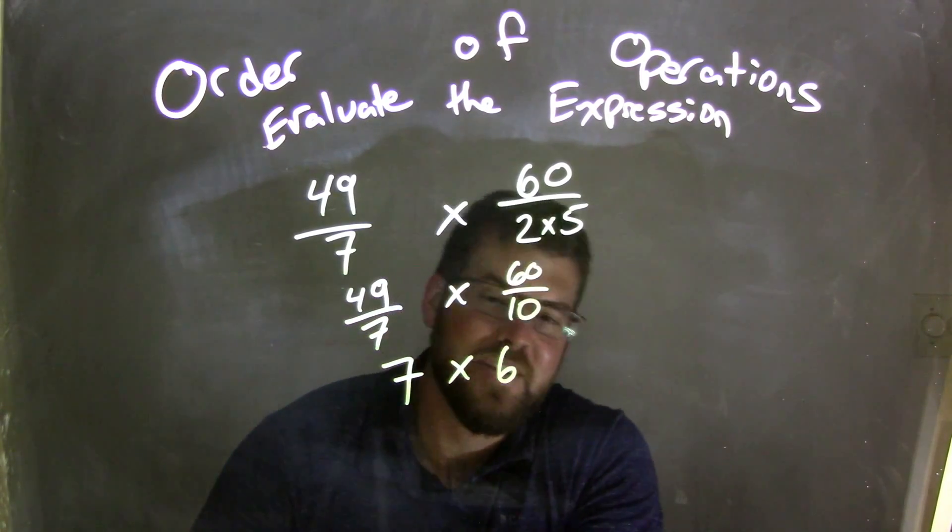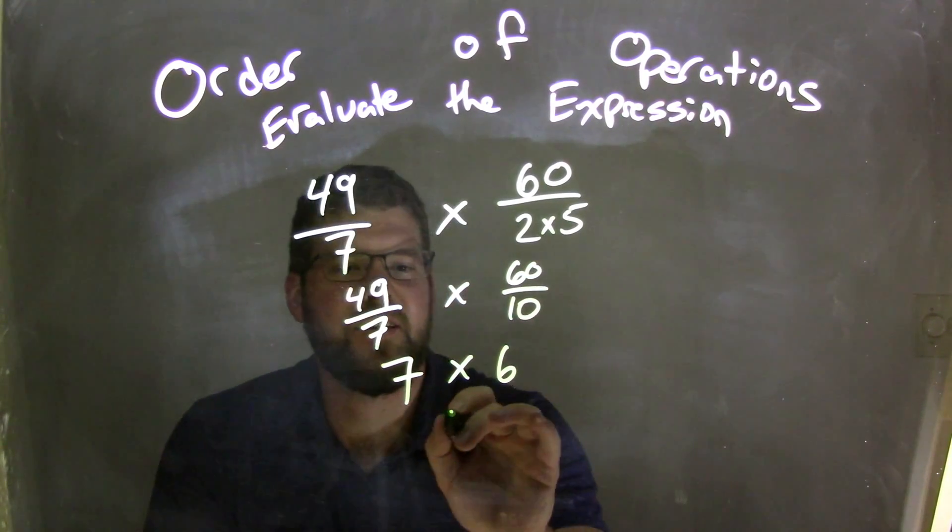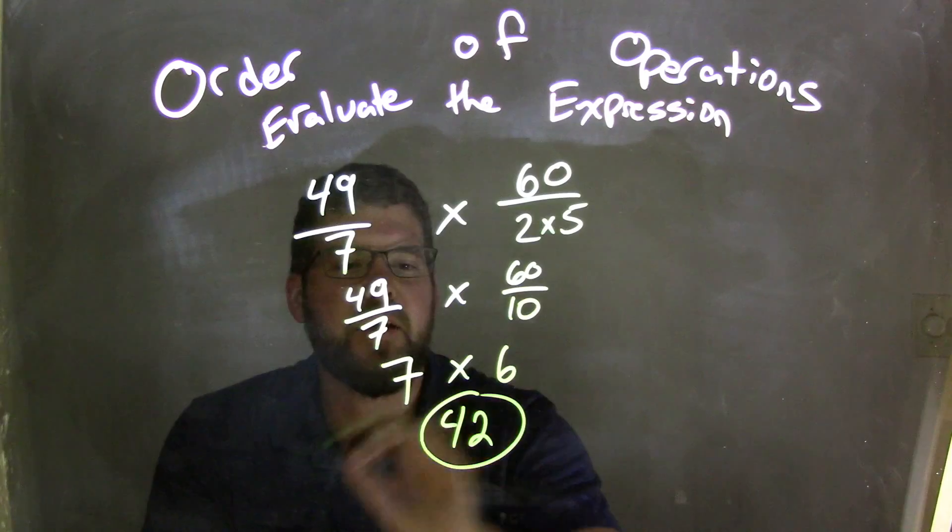left with is 7 times 6. Well, 7 times 6 is 42, and there's my final answer.